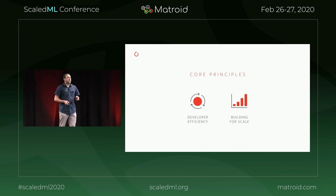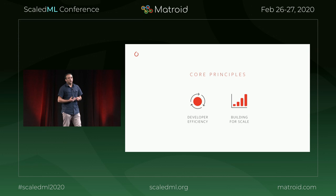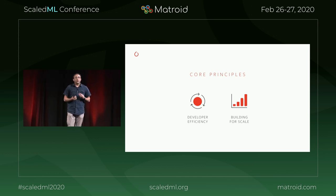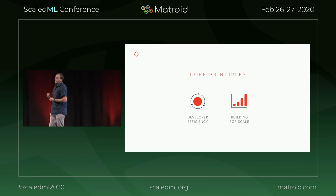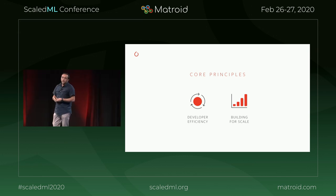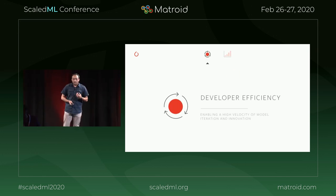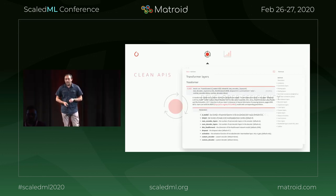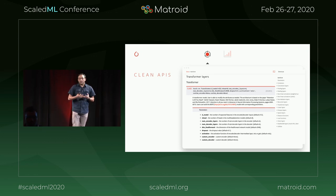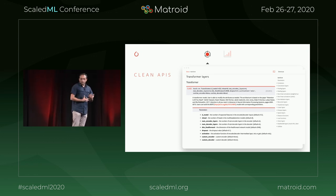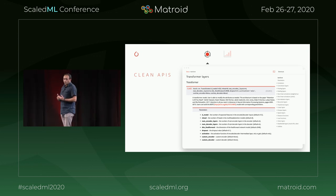The core principles whenever we think about new features at PyTorch are two things. One is developer efficiency — how we enable developers to be productive. The second thing is how do we build this at scale. Examples of developer efficiency features that we've added recently include things like clean APIs when we design new features and capabilities.